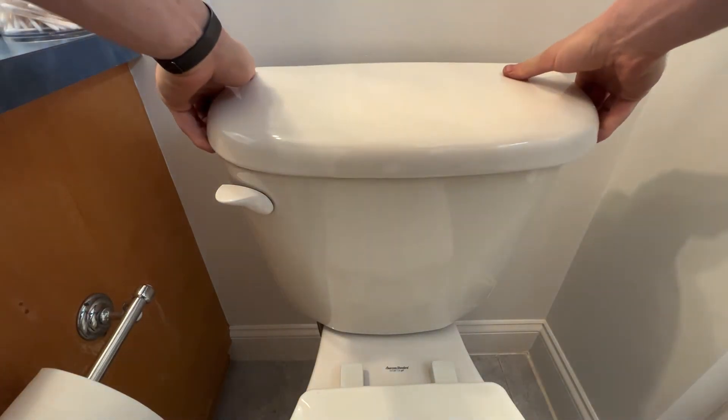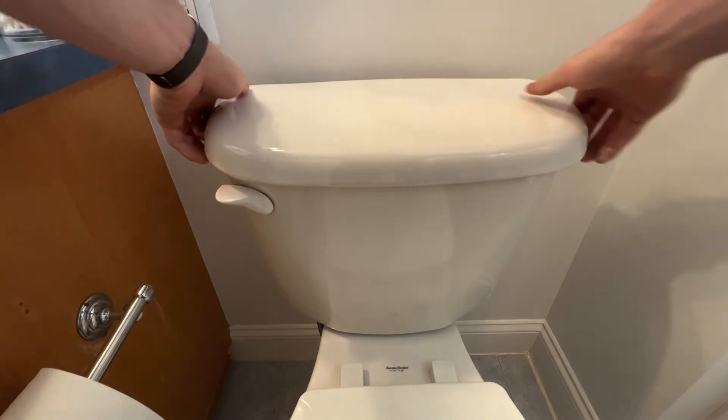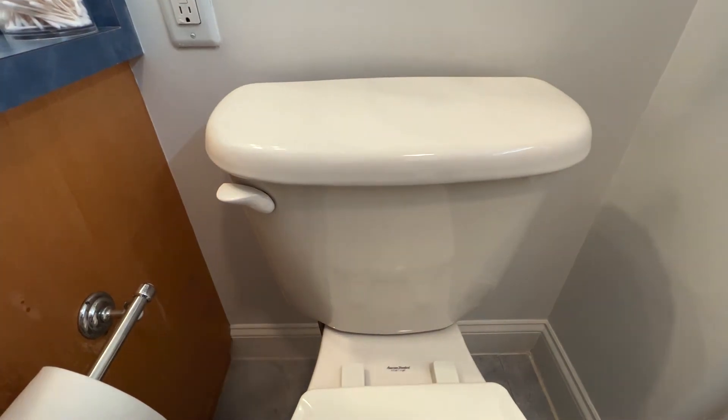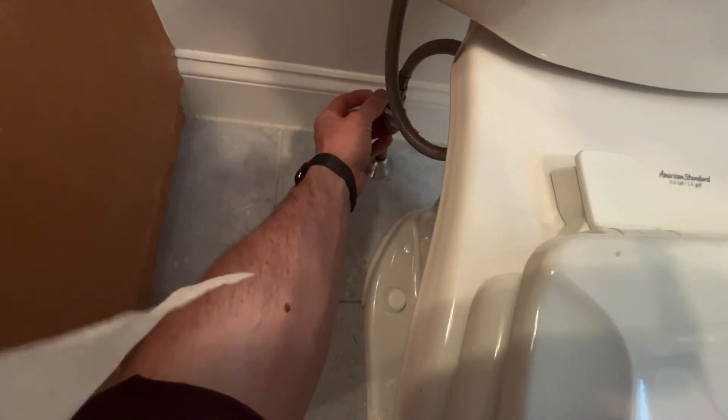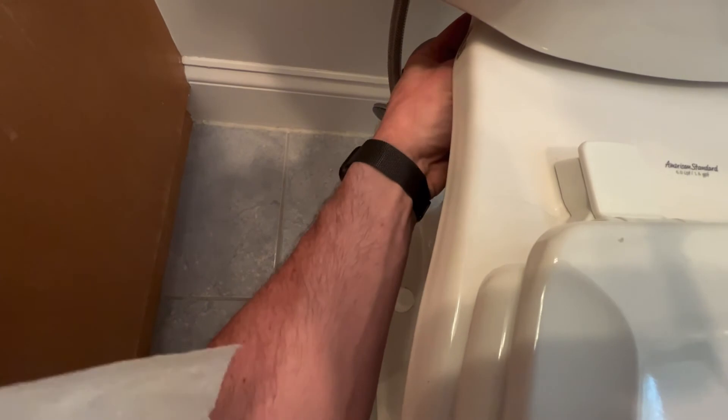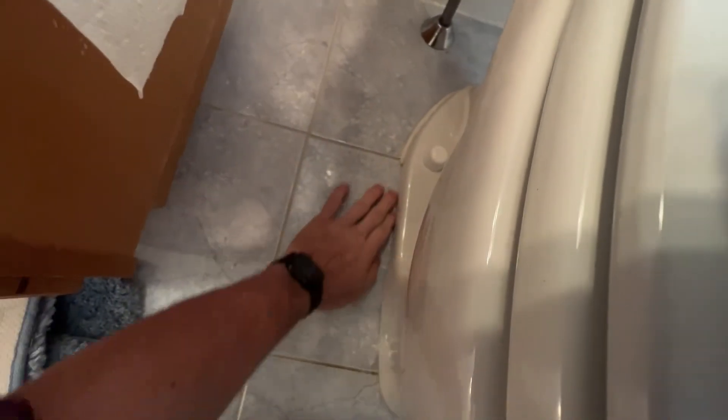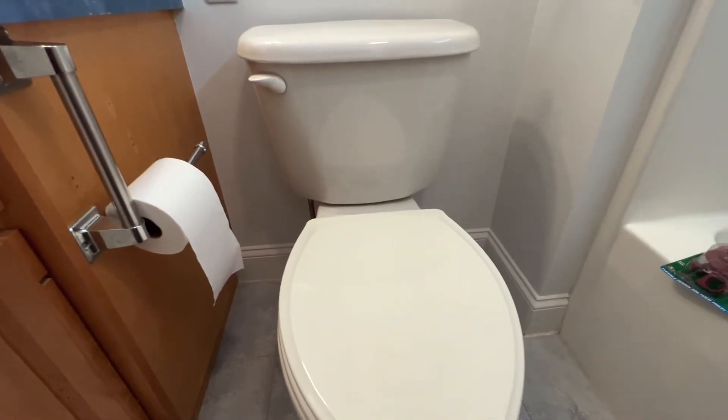Put the lid back on, and we'll just go around and double check the stop, make sure that's okay. Double check our tank bowl bolts, make sure that they're all right. And then lastly, just double check around the base while we're here. Just cover everything, make sure nothing else is leaking. But with that, that should be it.